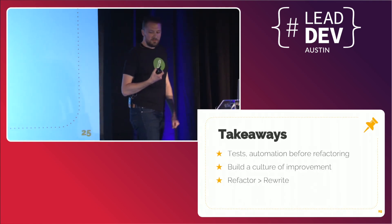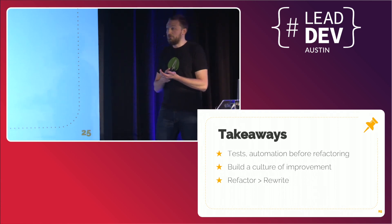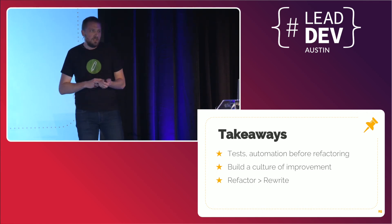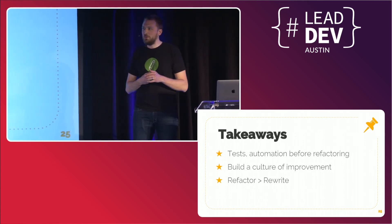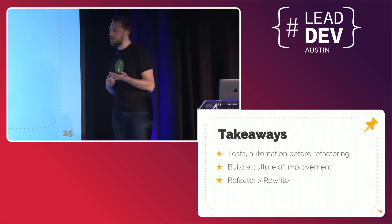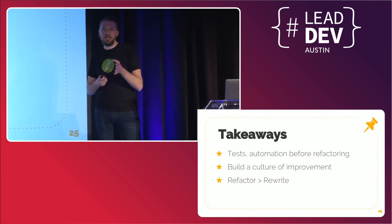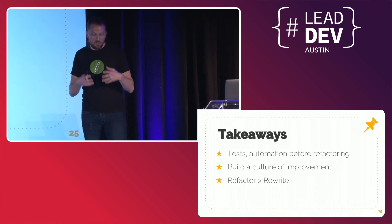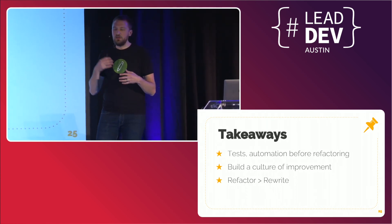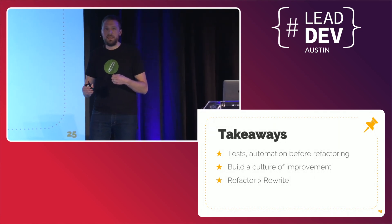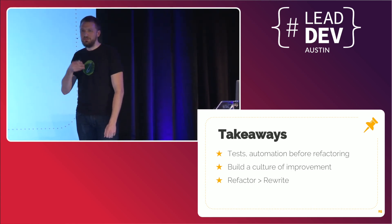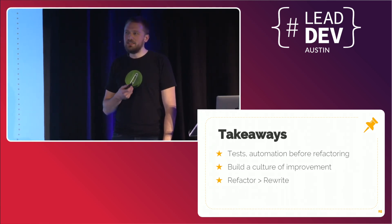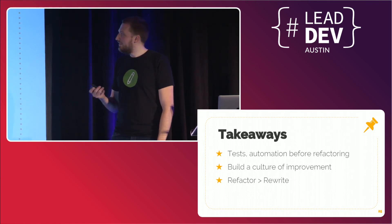Some takeaways: if you're going to do a rebuild or rewrite, start with tests and automation because those will save you when you have to make changes in the real world. The hardest thing to change, especially in larger organizations, is culture — we had to get everyone okay with a culture of improvement rather than just shipping. We followed the Boy Scout rule: don't leave anything worse than when you found it. And I can't stress this enough — refactoring is always cleaner, safer, and better than rewriting.